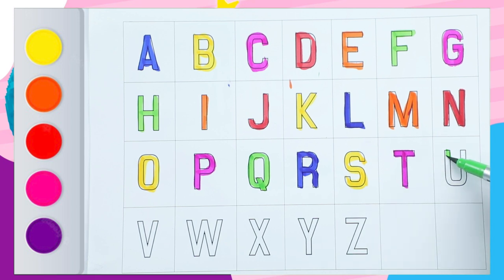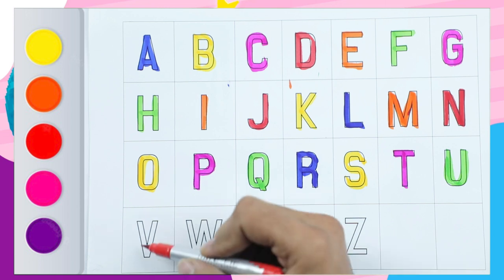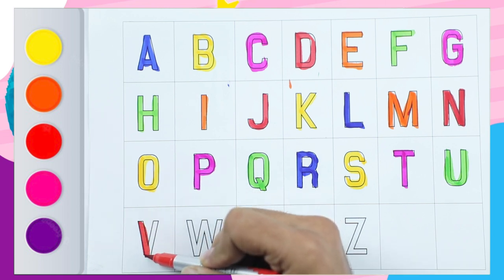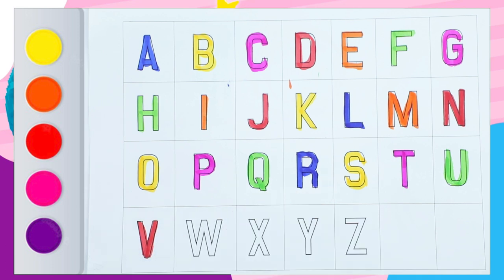U, green color U, it's U. V, red color V, V, capital V, V for wand.